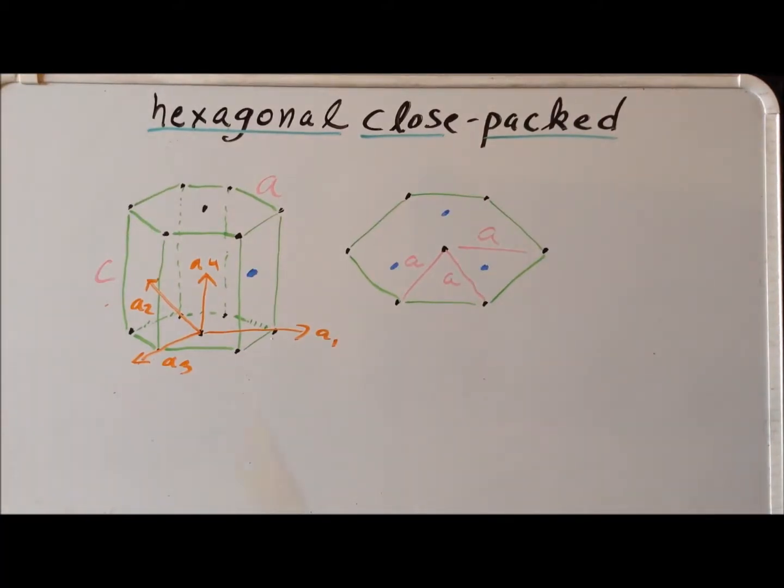The hexagonal close-packed system is a structure that is the most efficient packing system if we consider the atoms to be hard spheres. It is just as effective as the cubic close-packed system, which is another name that is often applied to the face-centered cubic system.